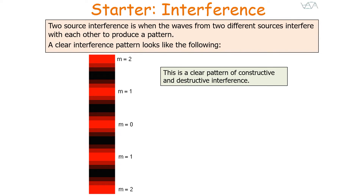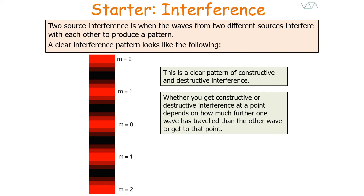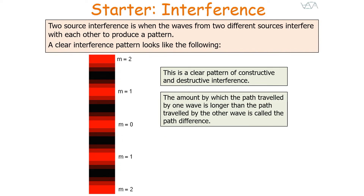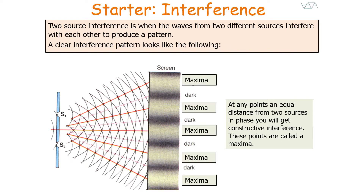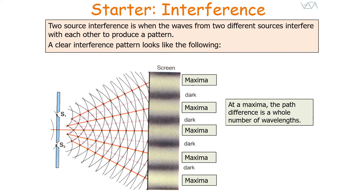What we see is a clear pattern of constructive and destructive interference. Whether you get constructive or destructive interference at a point depends on how much further one wave has travelled compared to the other to reach that point on the screen. The amount by which the path of one wave is longer or shorter than the other is called the path difference. At any point an equal distance from two sources that are in phase, you will get constructive interference — these points are called maxima. At a maxima, the path difference is a whole number of wavelengths, and the two waves are in phase with a phase difference of zero.